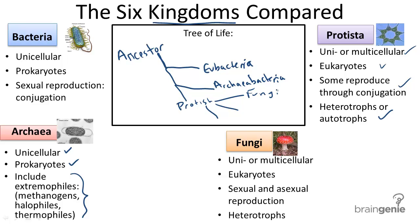Fungi may have developed as uni or multicellular, eukaryotic organisms that can reproduce sexually or asexually. Some examples of fungi are mushrooms and yeast, and they are heterotrophic.